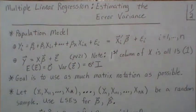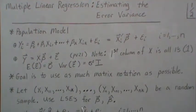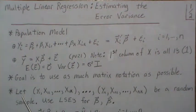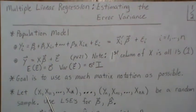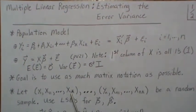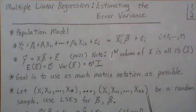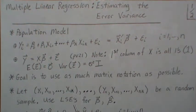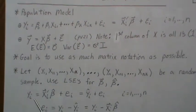As a goal, I want to use as much matrix notation as possible because in the long run it's going to help us with multiple linear regression. The setting is: let these tuples be a random sample, so we have our Y and our X as the predictor variable — one observation all the way to the nth observation.